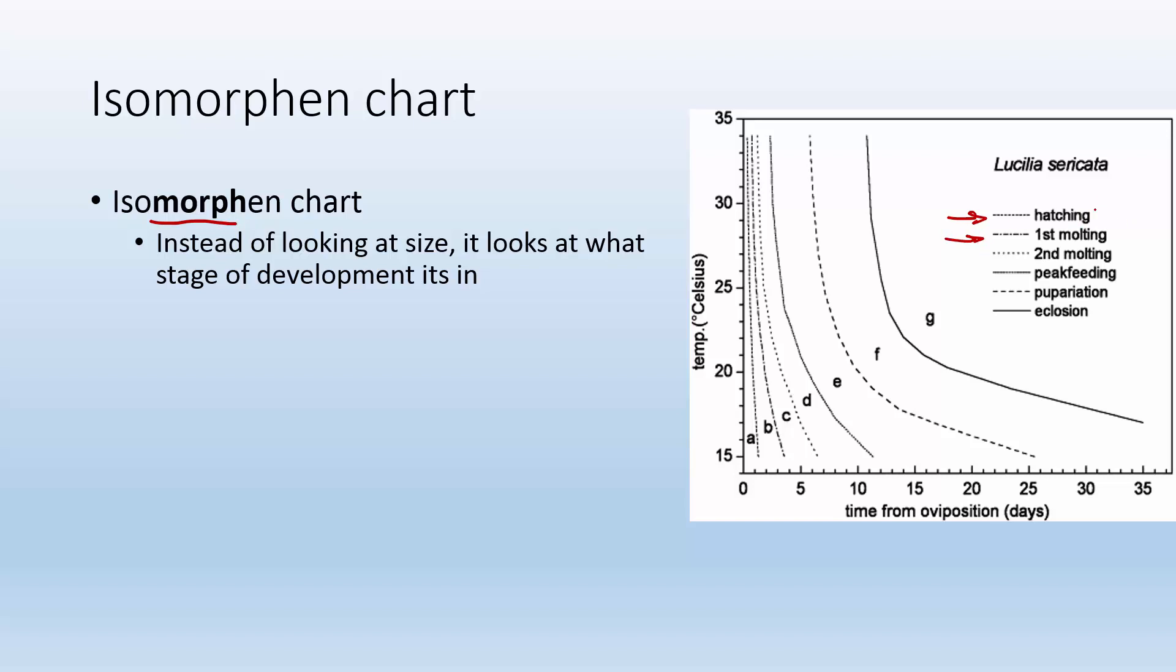Is it in the egg? Did it just hatch? Did it molt yet to go into the second instar? Did it molt the second time? Is it a pupa? Is it enclosed in its pupa? So instead of talking about how big it is, it's just talking about what form it's in. And that's how you use isomorphin charts.